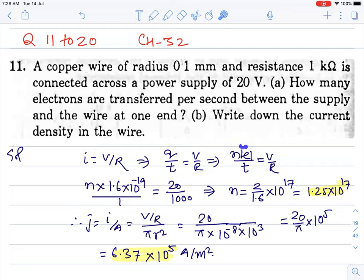I can write Q by t and V by R, and Q equals n times e, the quantization nature of charge. Now let's put the value of all. We will get the value of n.